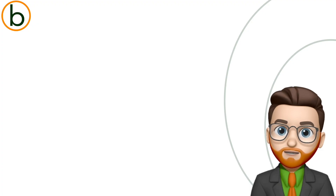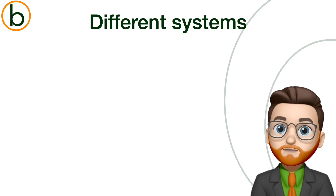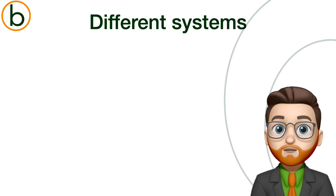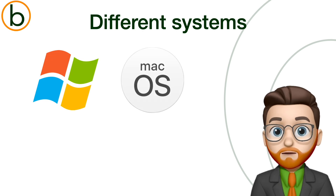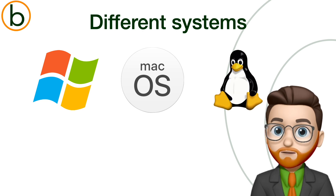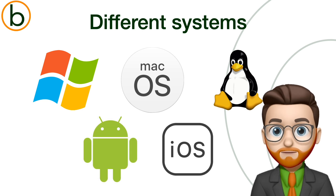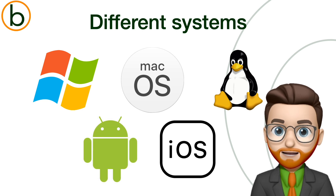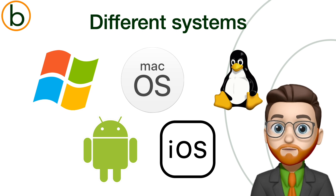There are several types of operating systems, each with its own features and layout. For general computers, Windows is the most well known, but there's also macOS for Apple computers and Linux, which is open source and free for everyone. For phones and tablets, we use Android or iOS. Every operating system has its own style, but they all do the same thing — they make sure your device works.